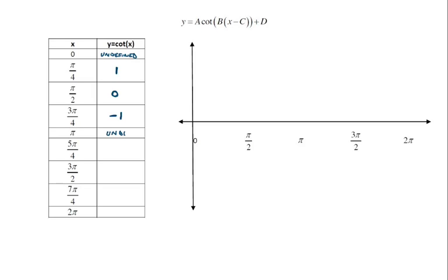Cotangent of zero would be undefined because sine is zero there. Pi over four would be one, pi over two would be zero, three pi over four would be negative one, and at pi, cotangent would be undefined again. The rest of the table follows the same pattern. Cotangent will also have a period of pi, much like tangent, because it repeats every pi units. You can verify these values using the unit circle.